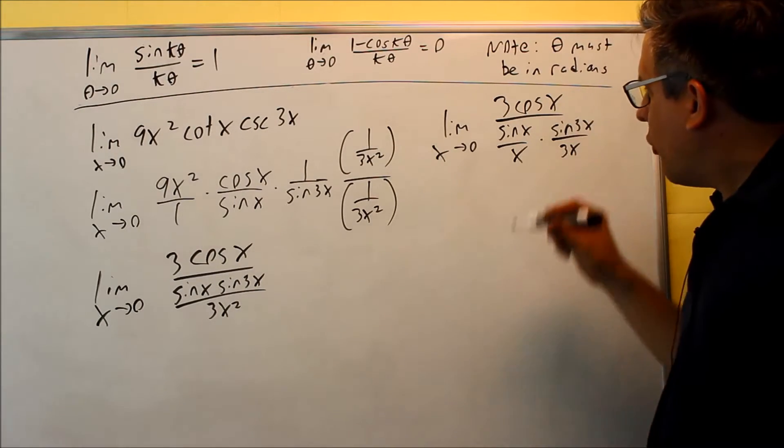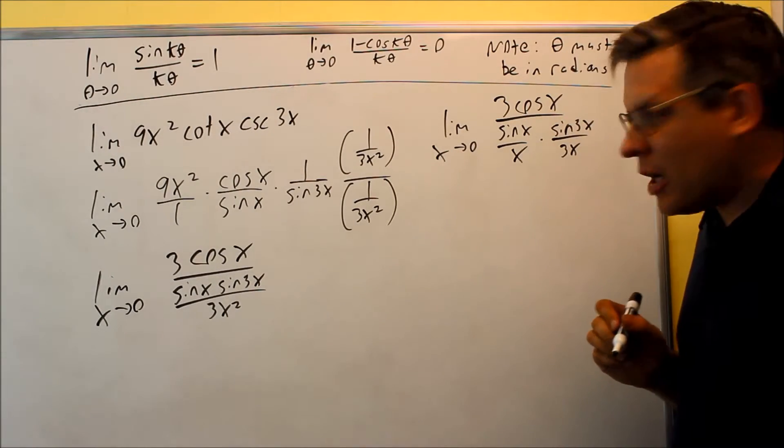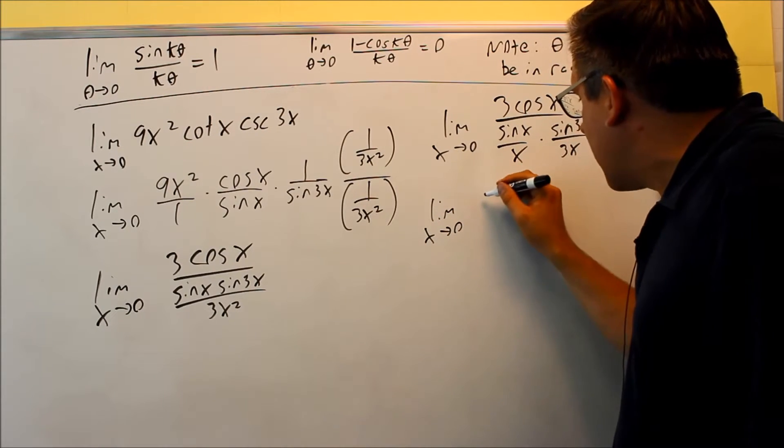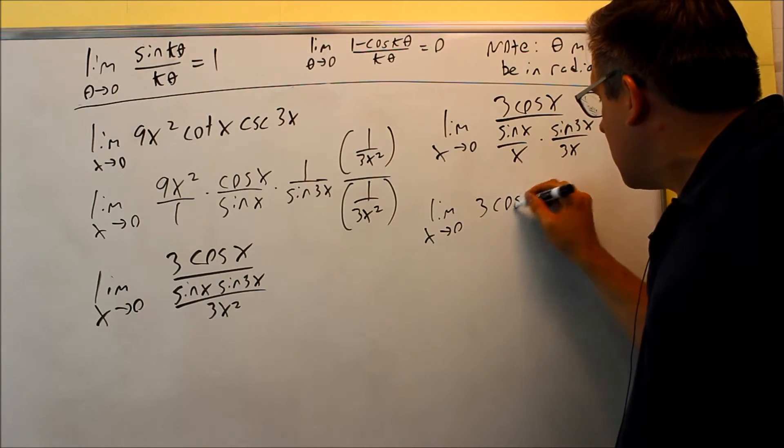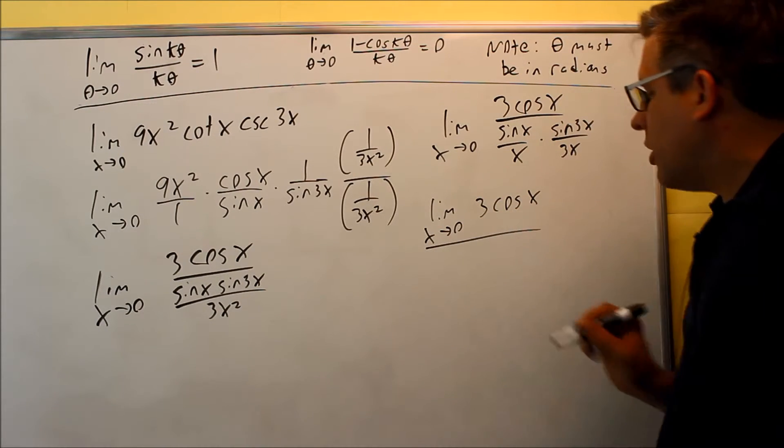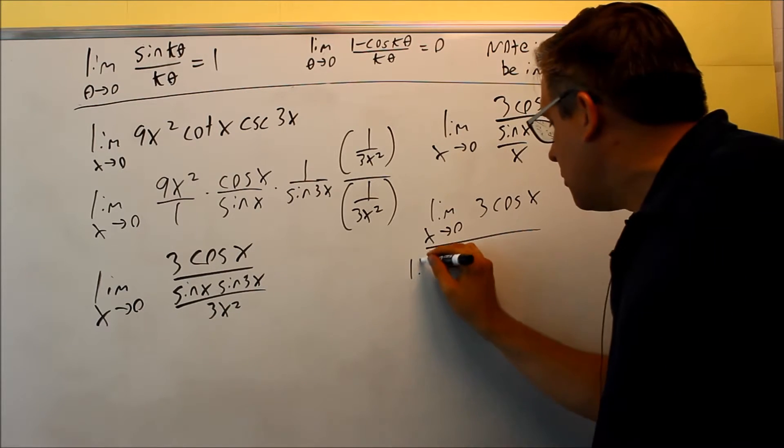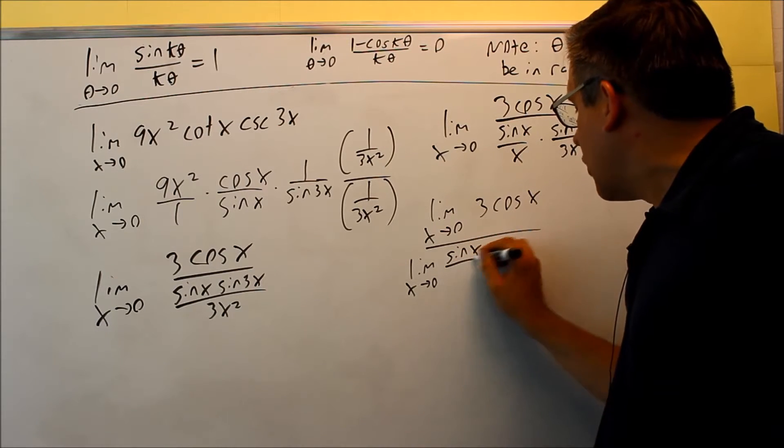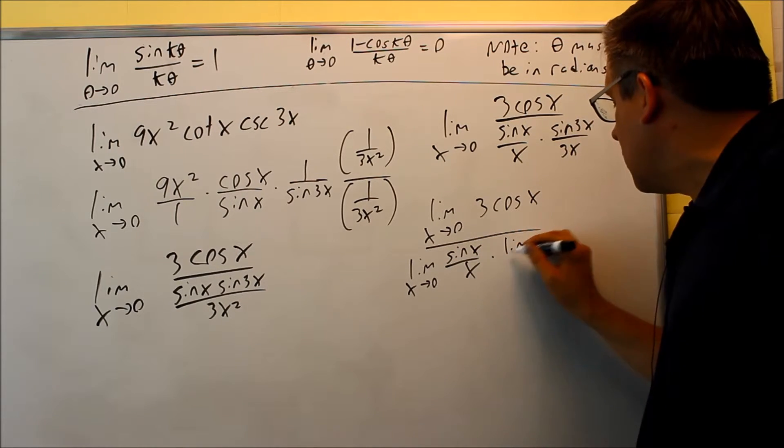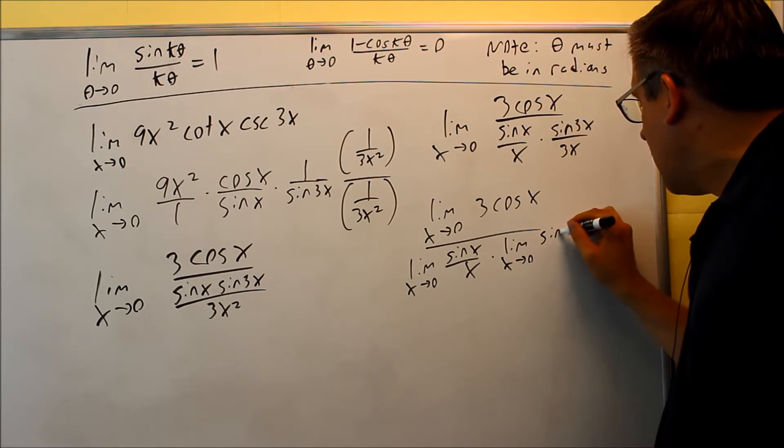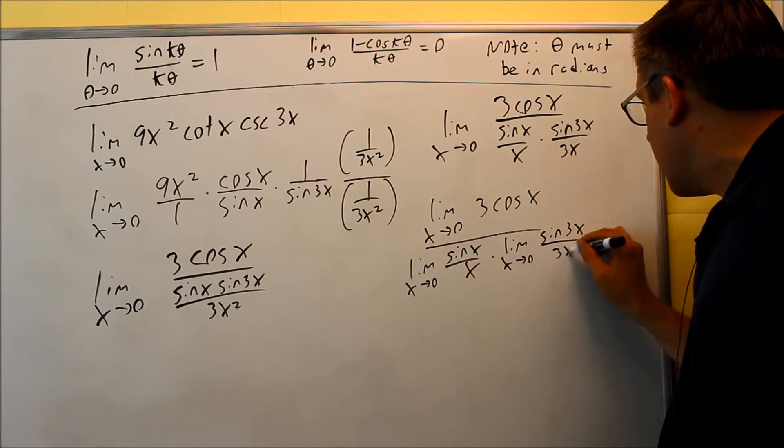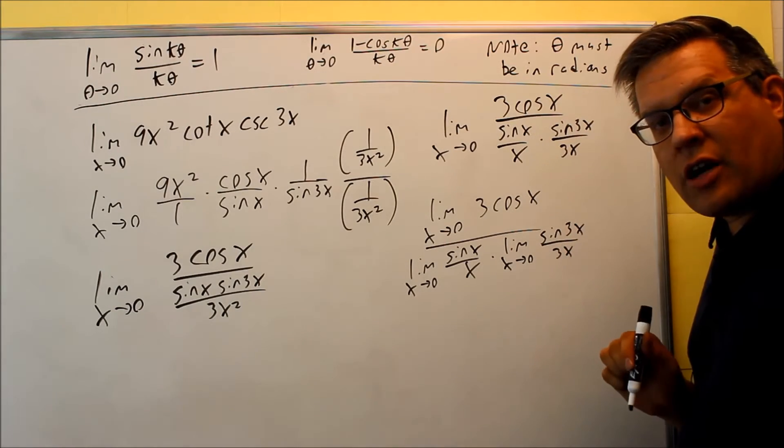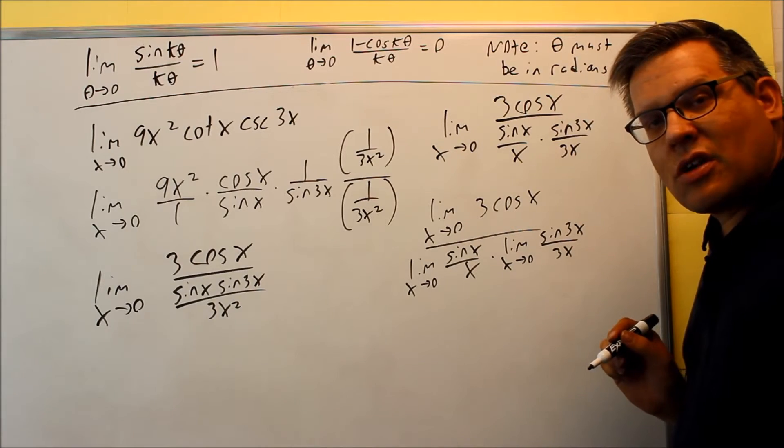The limit rules say that we can apply the limit on the top and bottom separately. I'm going to go ahead and write all this out for you. So you can actually see what exactly is happening. I'm going to apply the limit to the top. So I have a limit x goes to 0 of 3 cosine x. Then on the bottom I have limits for each of these. The limit x goes to 0 sine x over x and then times the limit x goes to 0 of sine 3x over 3x. So I apply the limit to everything top and bottom and you are allowed to do that.